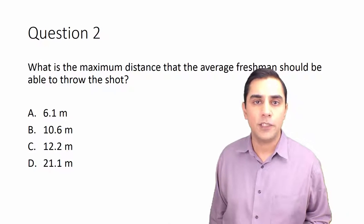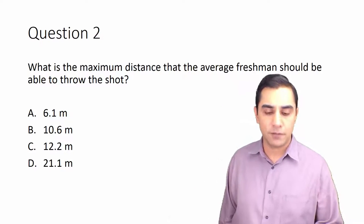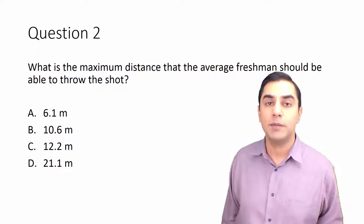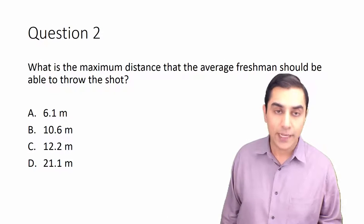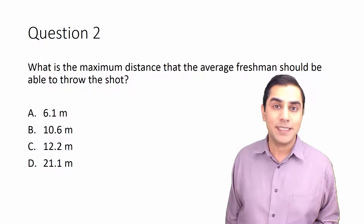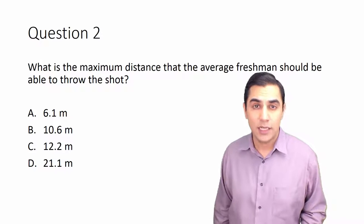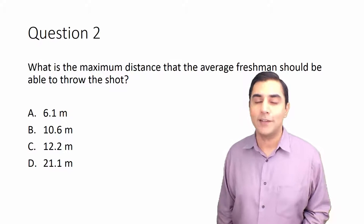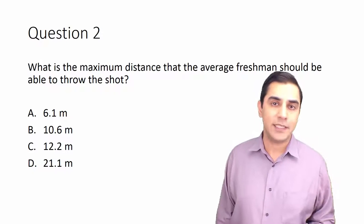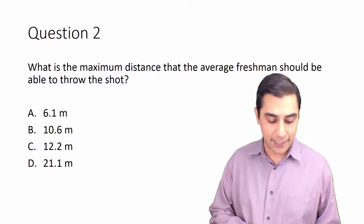And of course, question two: What is the maximum distance that the average freshman should be able to throw the shot? Maximum distance implies maximum range. For those of you thinking ahead, there's a little bit of a trick to this, but we're going to discuss these answers in just a second.